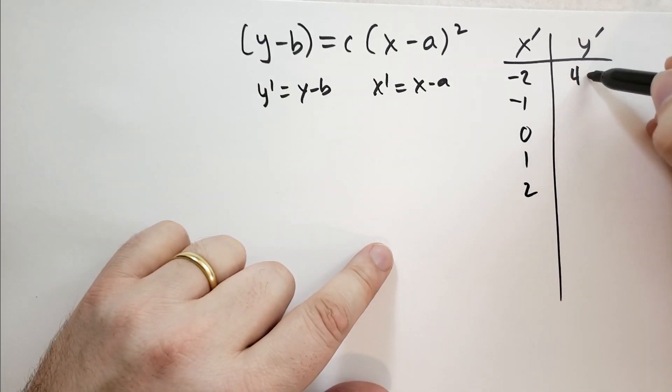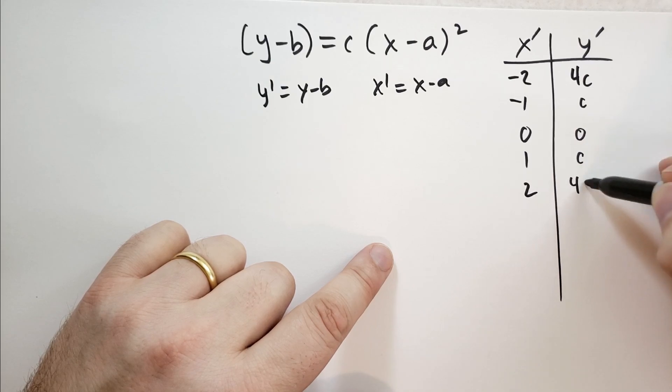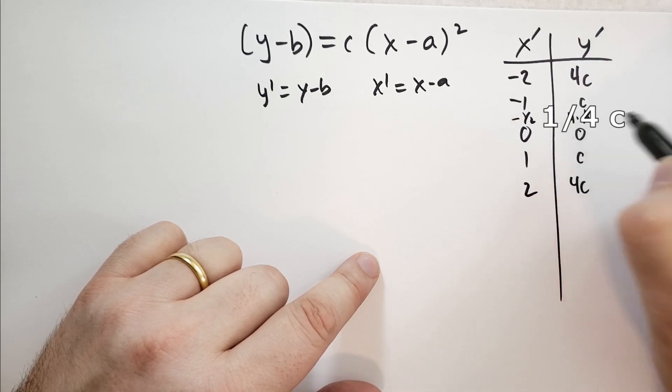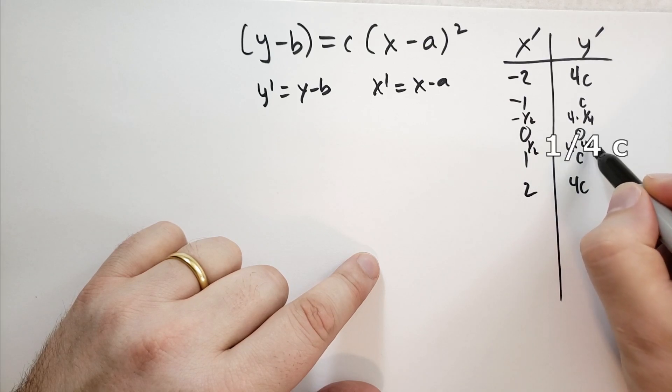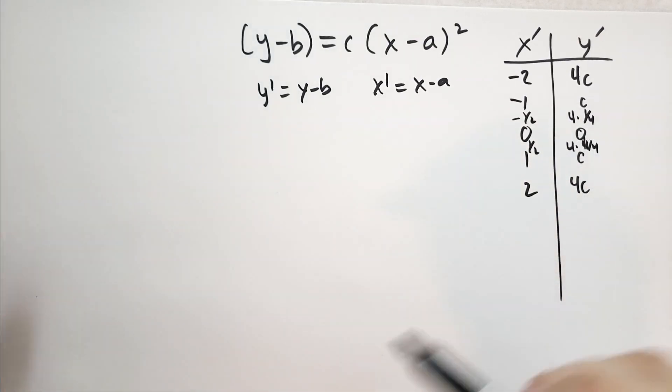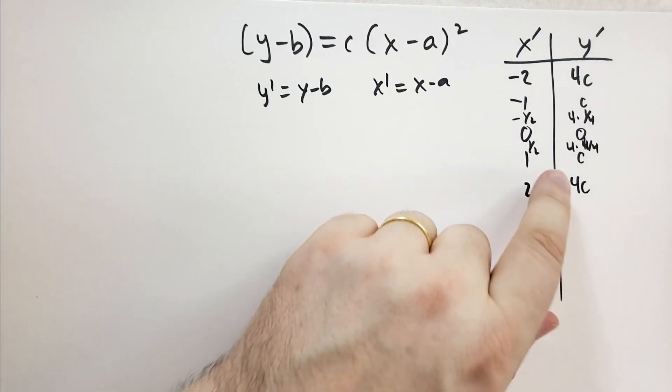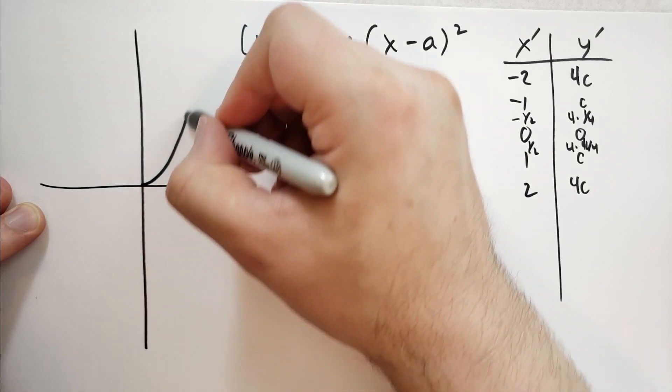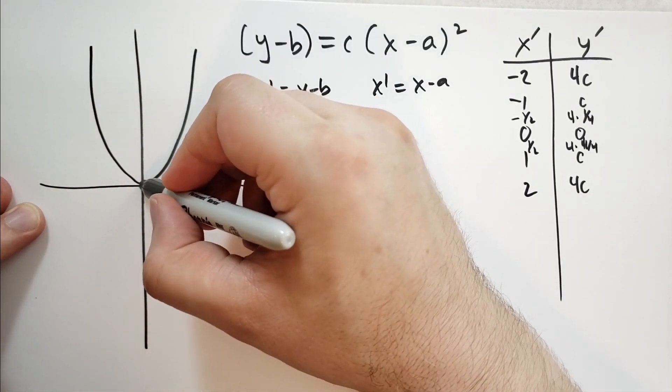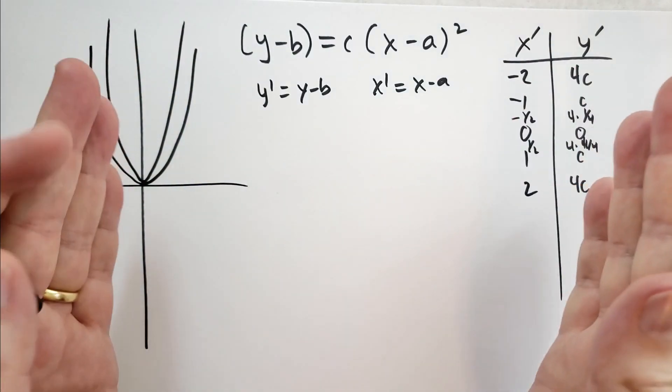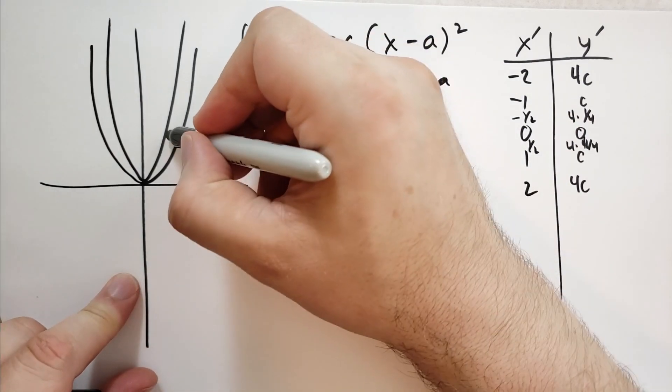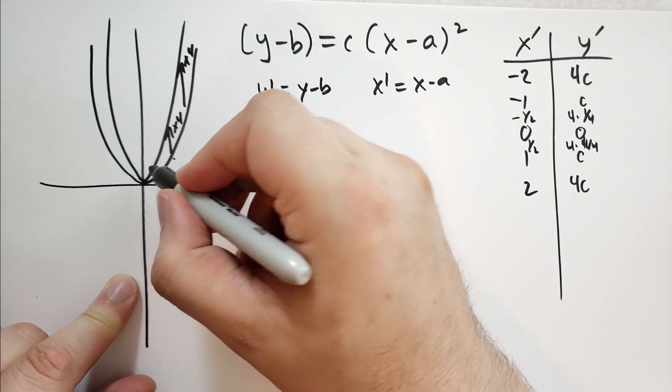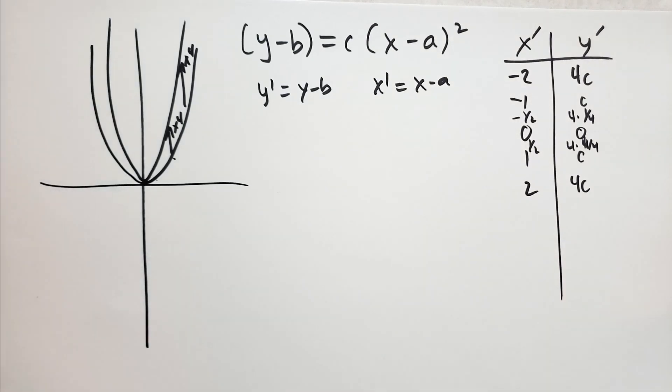Then y prime is going to be 4c, c, 0, c, and 4c. So what's going on here? Let's actually look at minus 1/2 and 1/2. What's happening? The graph is kind of squishing. If the graph used to be like this, now it's going to go up faster by a factor of 4. By multiplying by 4, it looks squishy, but really all these points are going up by times 4. What used to be 1 is now 4. What used to be 1/4 is now 1.